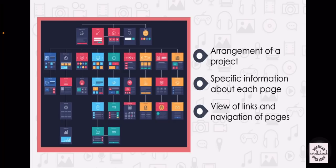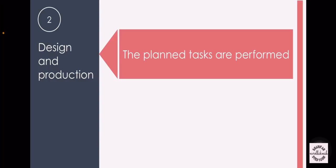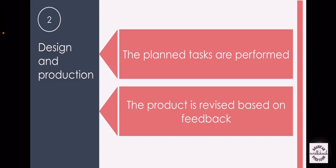The second stage of a multimedia project is design and production. In this stage, the planned tasks are performed to create a finished product. The product is revised based on continuous feedback received from the client. The production team must always keep reporting to the client to get feedback, and if there is any command from the client, the production team has to take it into consideration and redo or redesign the project according to the client's needs.